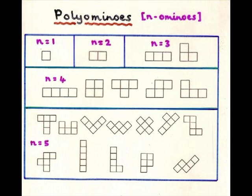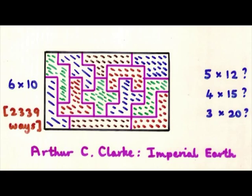Then you can actually try and put these in a box, because they take up a space of 60. And here is a way of putting these 12 pentominoes into a six-by-ten box. In fact, there are 2,339 ways of doing this.